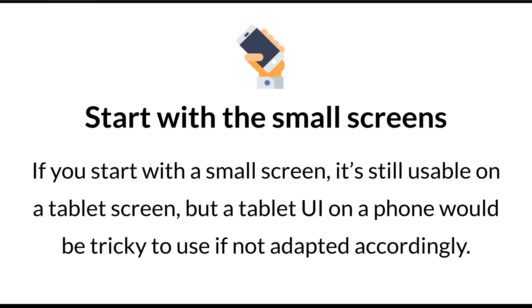If you're working on an Android app that will cover a lot of different screen sizes and devices, always start with small screens in mind. If you start with a small screen, it's still usable on a tablet screen, but a tablet UI on a phone would be tricky to use if not adapted accordingly. This is the concept of mobile first — sorting out the most important elements for smaller screens, because adapting to bigger screens becomes easier and you can add more functionality or detail in the experience.